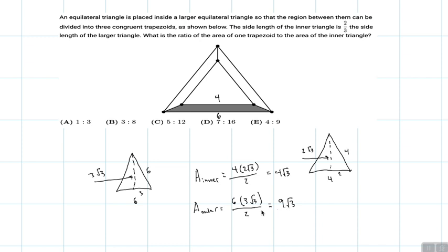So the area of the three trapezoids is simply just the area of the outer triangle minus the area of the inner triangle. Therefore, the area of one shaded trapezoid is just this divided by three.